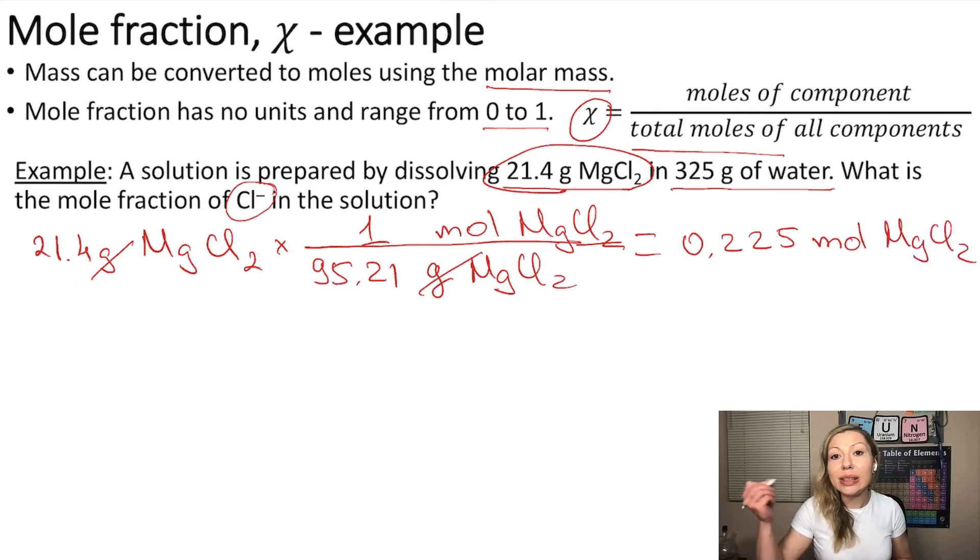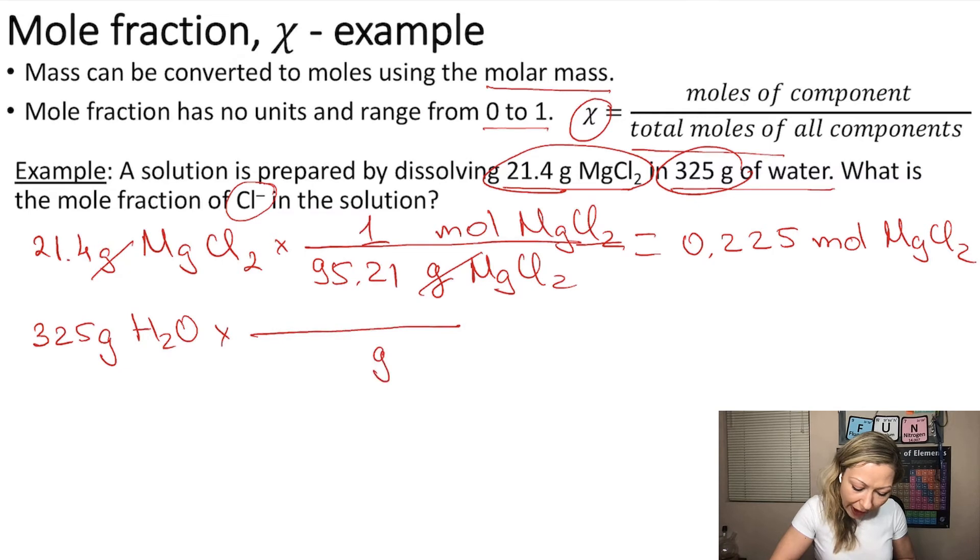Let's do the same for the water, because we also need the total moles of all components, so we need to take into account the moles of water. We start with 325 grams of H2O, multiplying it by the conversion factor.